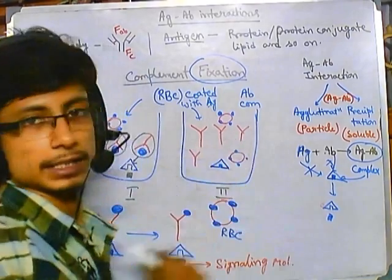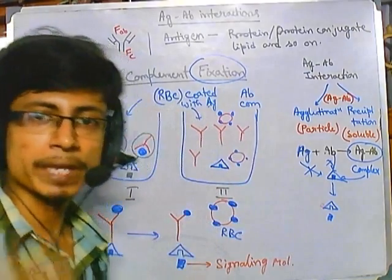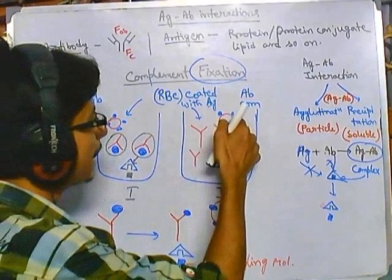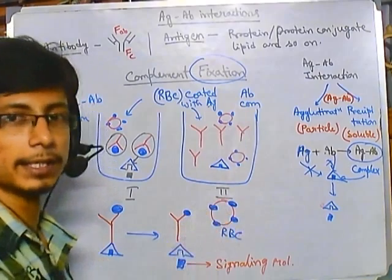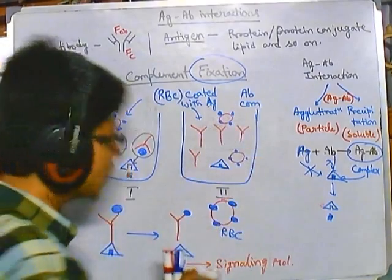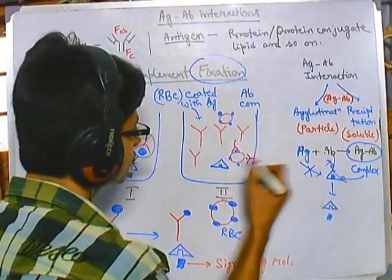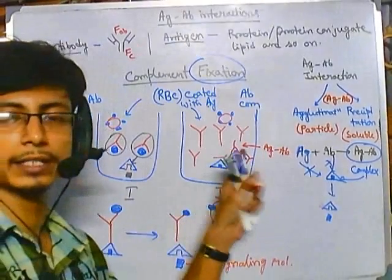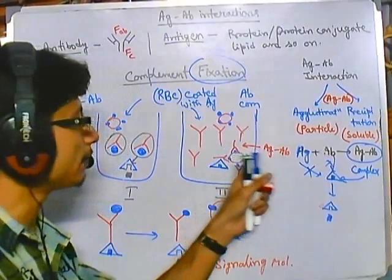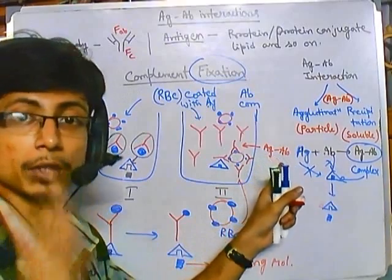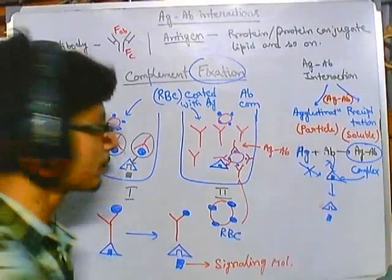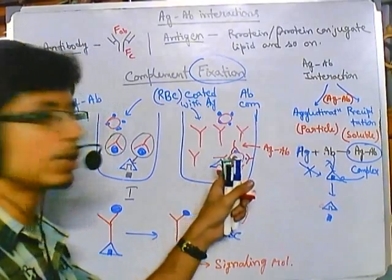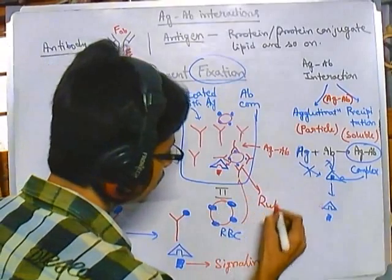In the second case, there was no antigen originally, so no antigen-antibody complex formed, and the complement was not fixed. Now when we add the antigen-coated RBCs, the antibodies present will start binding to the antigens on the RBCs, forming antigen-antibody complexes. These new complexes then fix the complement, causing the complement system to act on the red blood cells, rupturing them.